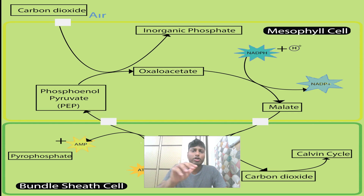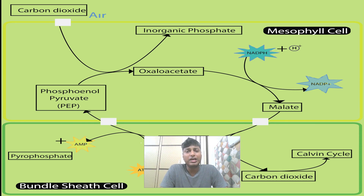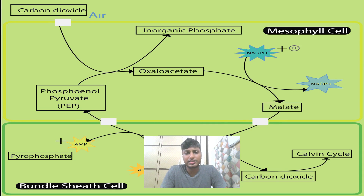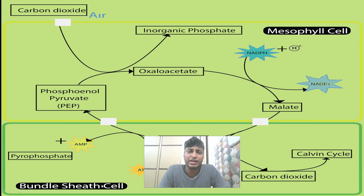Now that we understand the anatomy of the C4 leaf, let us understand the C4 pathway. In C4 plants there are outer mesophyll cells and inner circular cells known as bundle sheath cells. The C4 pathway occurs in two cells — the outer mesophyll cells and the inner bundle sheath cells — and that is why this pathway is divided into two compartments. We will look at what occurs in the mesophyll cell and what happens in the bundle sheath cell.